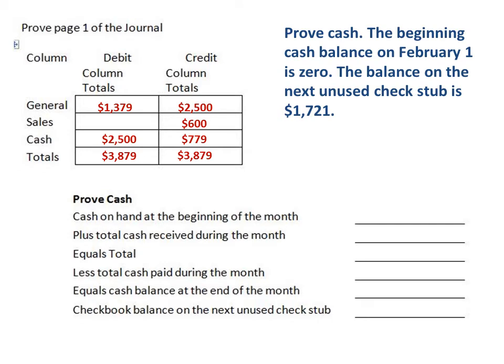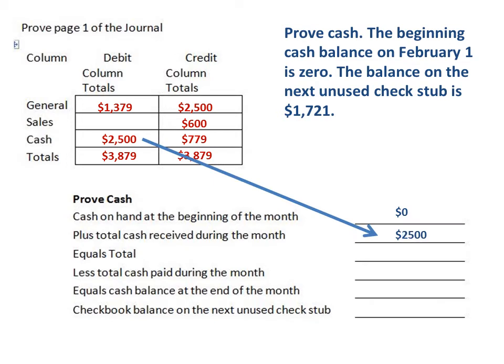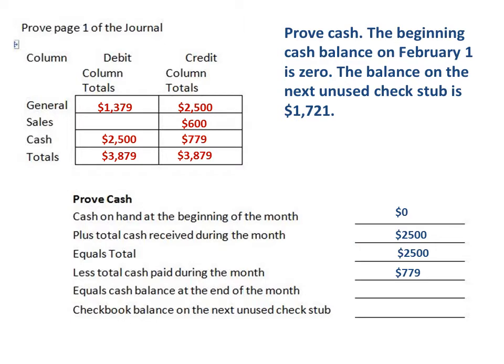We're going to get a form like this. We need to find out: what was our cash on hand at the beginning of the month? The transaction says the cash balance on February 1 is $0, so our cash on hand at the beginning of the month is $0. Our total cash received during the month is our cash debit column, which is $2,500. So $0 plus $2,500 gives us $2,500. Then, less total cash paid during the month — that's represented by our cash credit column, which is $7.79 — and that gives us a cash balance at the end of the month of $2,500 minus $7.79.